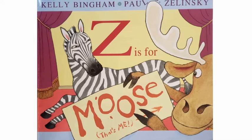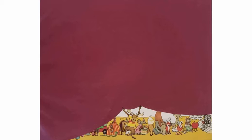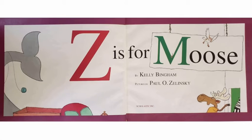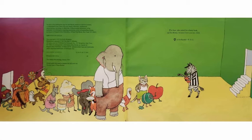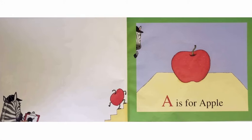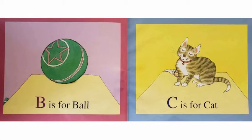Z is for Moose, by Kelly Bingham. A is for Apple. B is for Ball. C is for Cat.